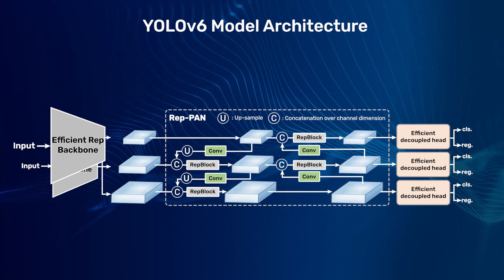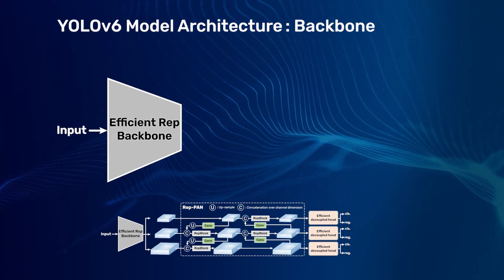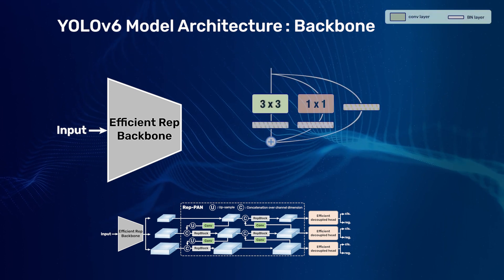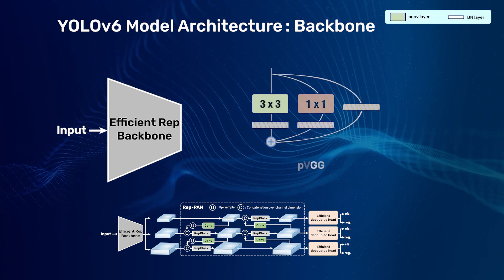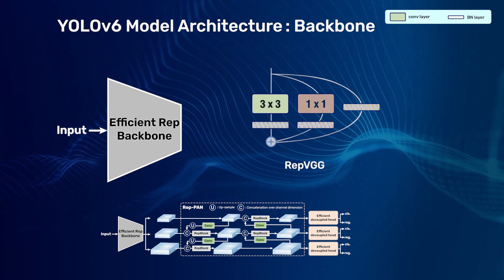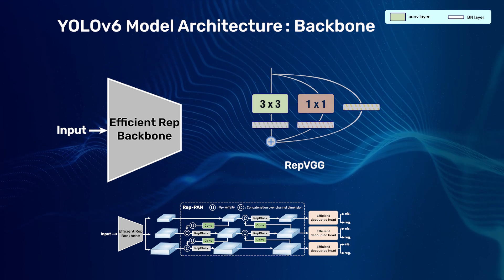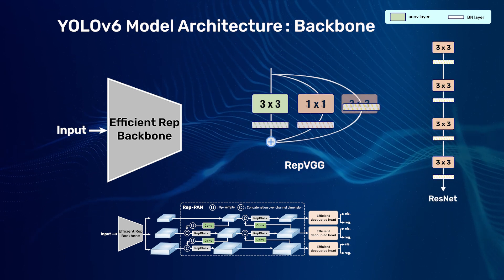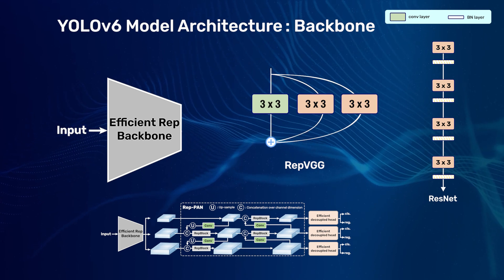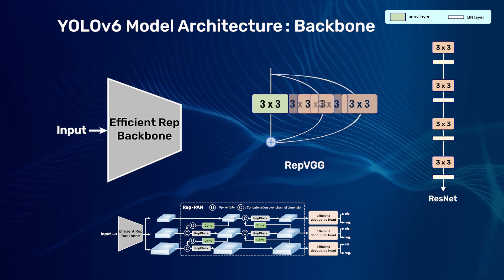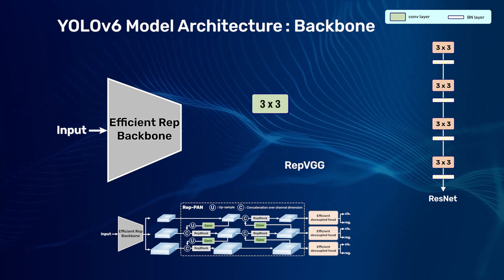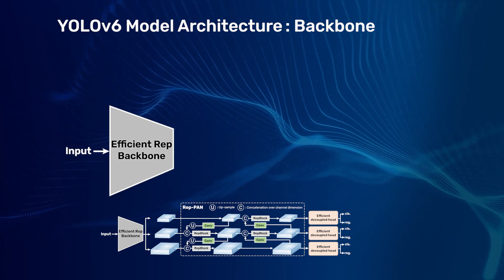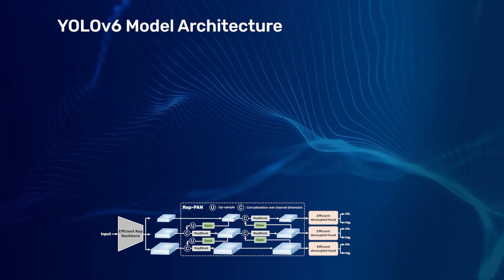It uses an efficient re-parameterized backbone, also known as EfficientREP. For nano, tiny, and small models, it uses REP-VGG, which is a modified version of VGG with skip connections, just like in ResNets. The skip connections are used during the training phase, but the weights for the skip connections are fused for inference to make the model faster. Up to twice the memory can be saved by converting the residual network to linear.